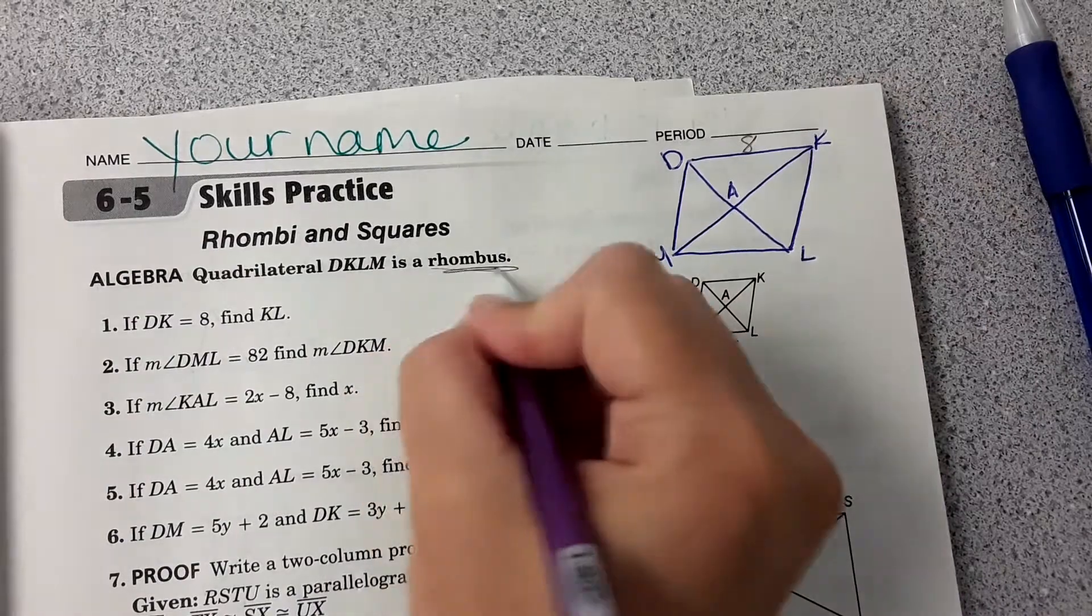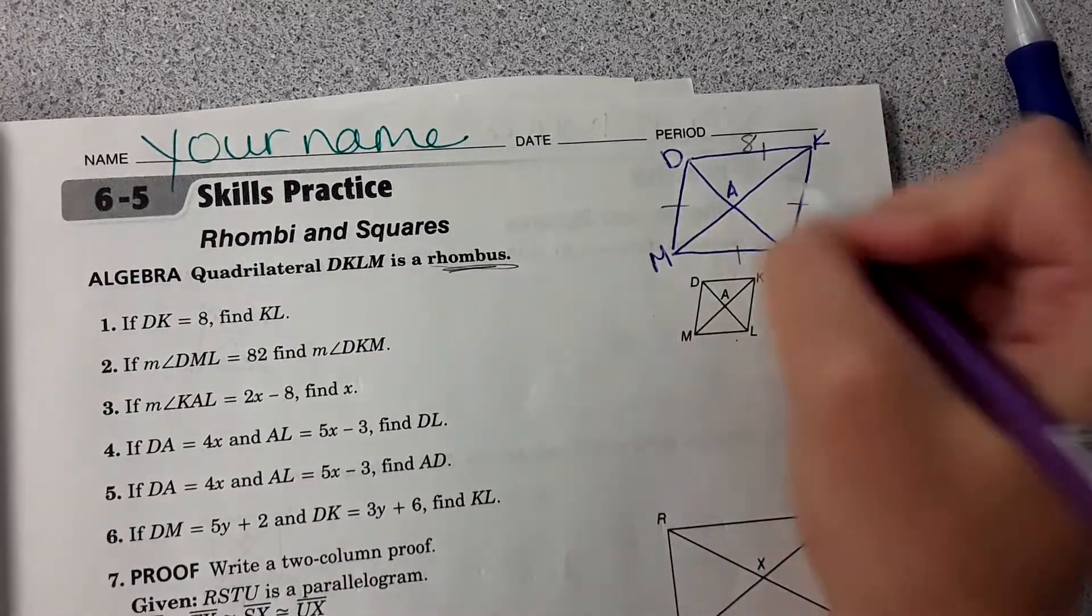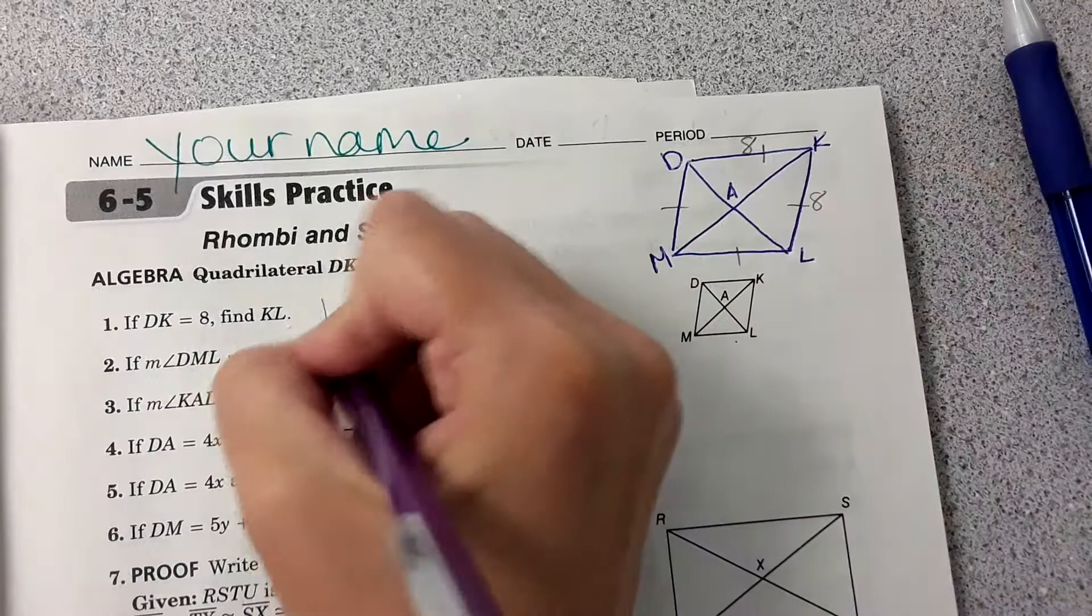Well, it tells us it's a rhombus and a rhombus has all sides congruent. So therefore, if this is 8, then KL must be 8 as well.